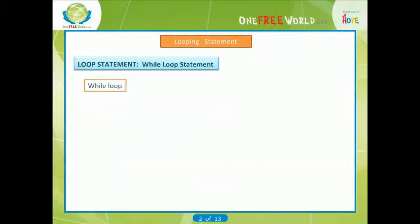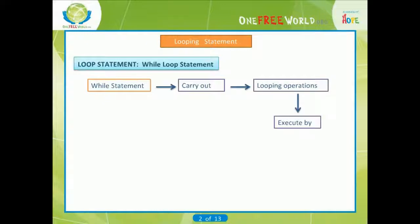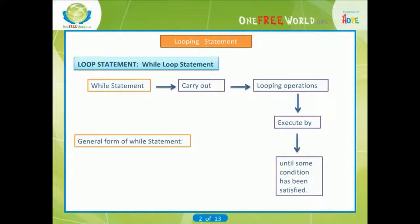The while loop executes a block of code while a condition is true. The while statement is used to carry out looping operations in which a group of statements is executed repeatedly until some condition has been satisfied. The general form of the while statement is: while (expression) statement.